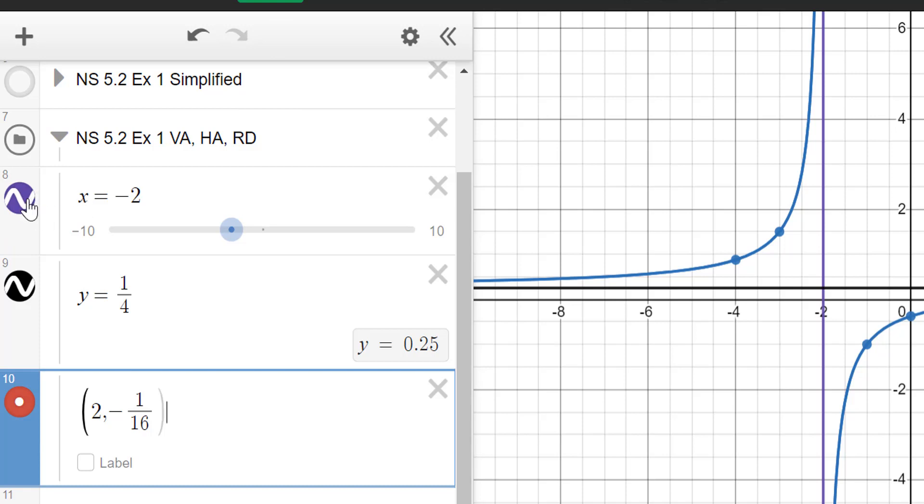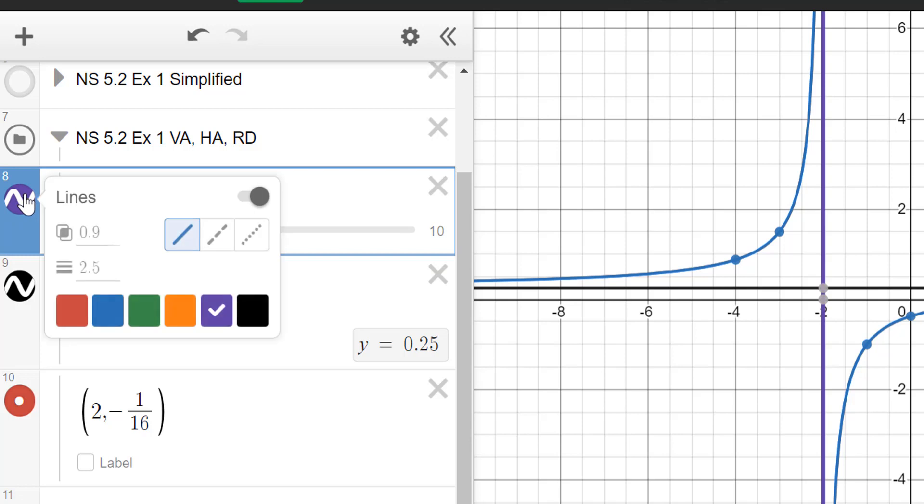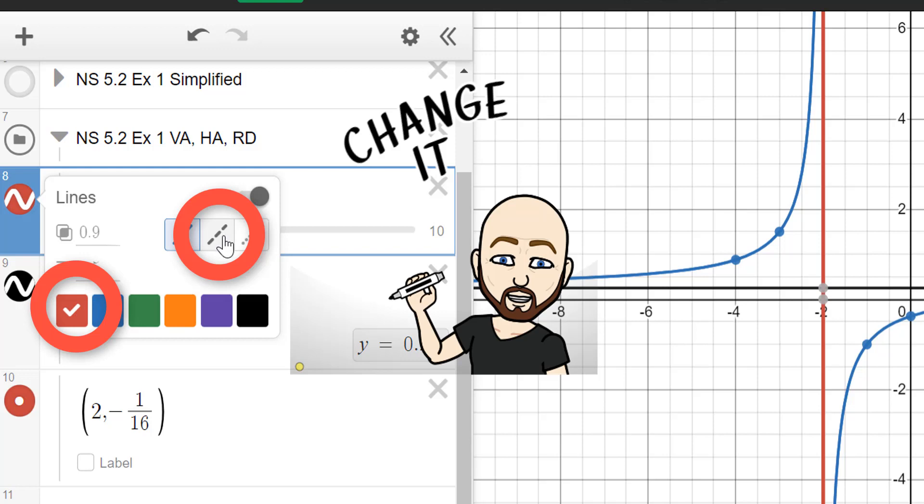So you're going to go over, and this is kind of a pain on Chromebooks and devices where the touchpad might be a little bit more sensitive or not as accurate. You're going to go over to this colored part of the line or the point. You're going to click and hold on that. And then eventually it's going to pop up with this other menu. And you're going to change the lines to red and then dash.